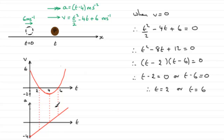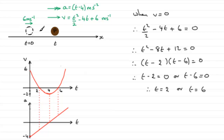At 6 seconds it stops. Then with the acceleration still positive it starts to speed up and moves again to the right. So we've got this effect where it moves at speed, slows down, stops at 2 seconds, speeds up and then slows down again, stops at 6 seconds, and then speeds up and moves out to the right, speeding up all the time.